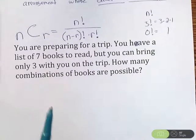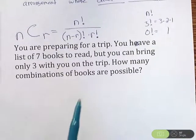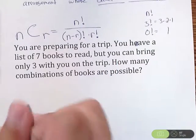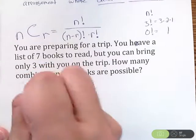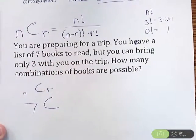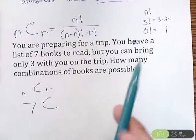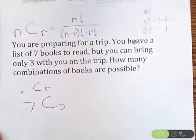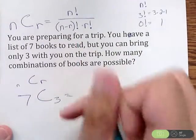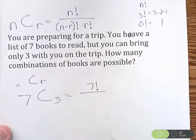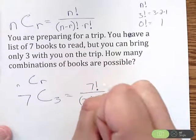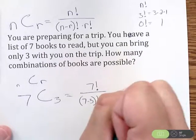We need to figure out, how many total am I choosing from? We have a list of 7 books to read, but you can bring only 3 with you. So there's 7 total, that's going to be our n, because remember it's nCr. And then we have to figure out, how many am I choosing out of the 7? Well, I'm bringing 3. So we have 7, combination 3. If I plug into the formula, that's going to be 7 factorial, divided by 7 minus 3, parentheses, factorial, times 3, factorial.